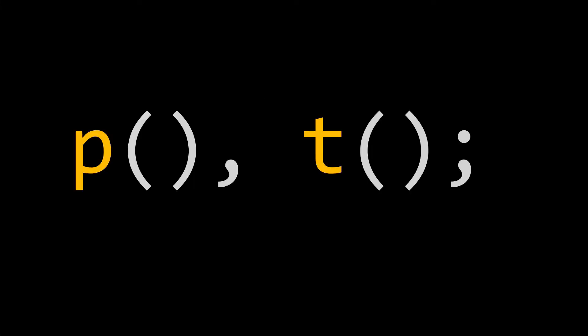The comma operator works as such. First we evaluate the left expression, the expression to the left of the comma operator, then the expression to the right of the comma operator. Lastly we return the result of that expression from the right, so the result of the right expression.